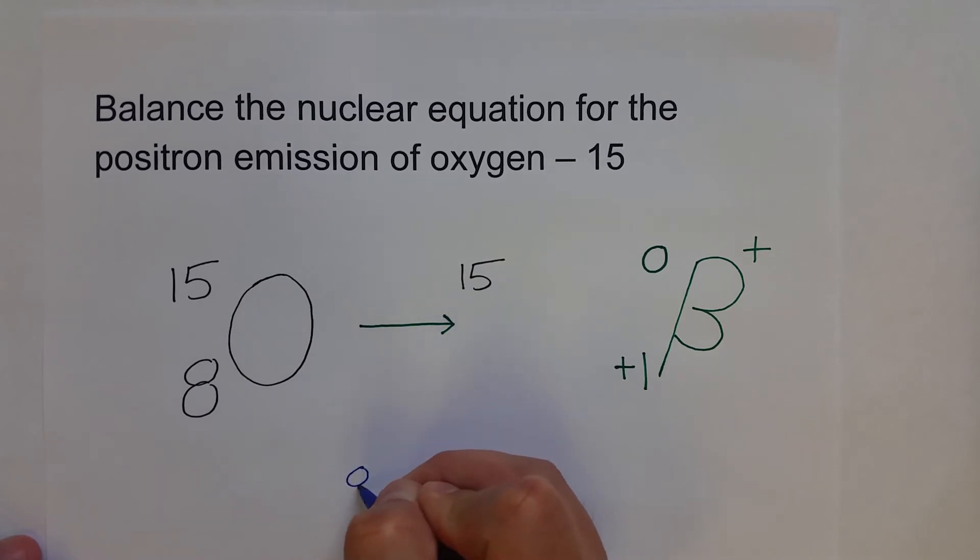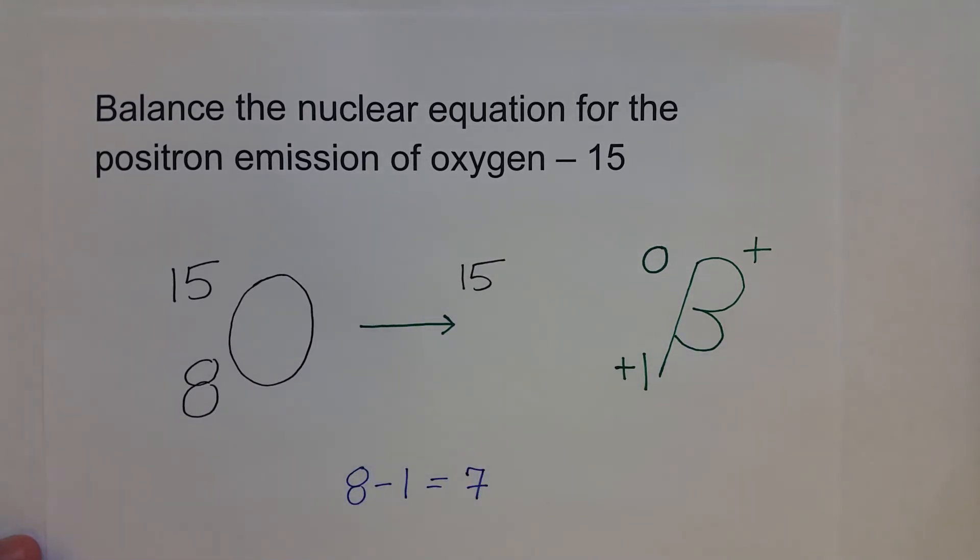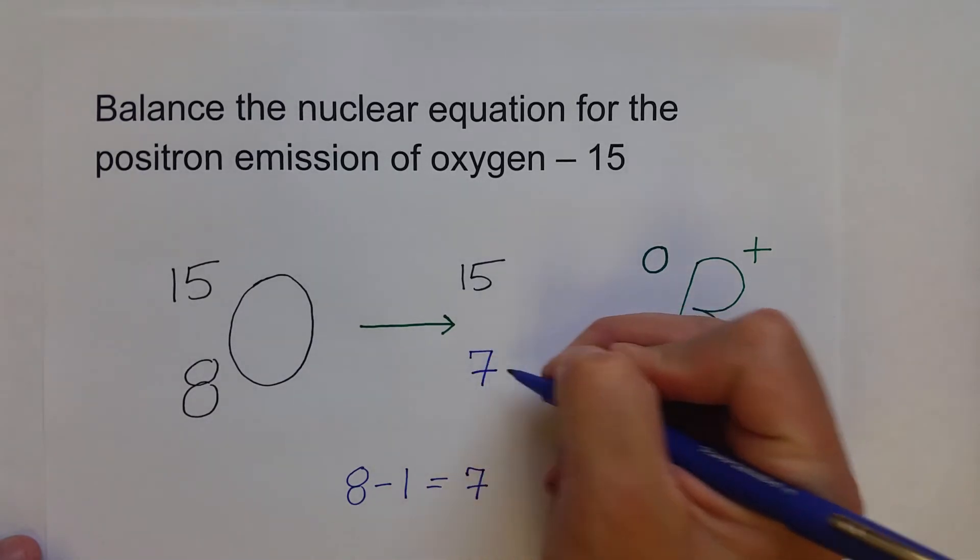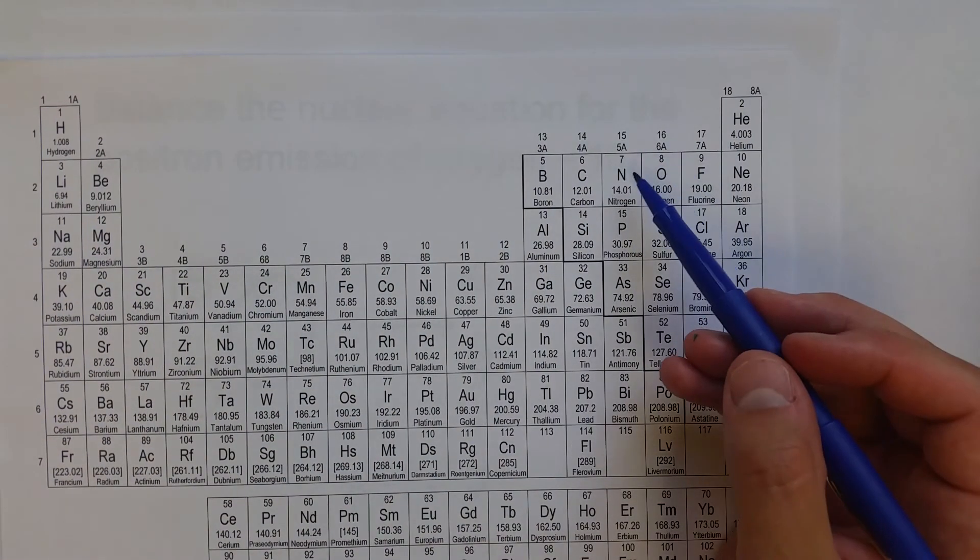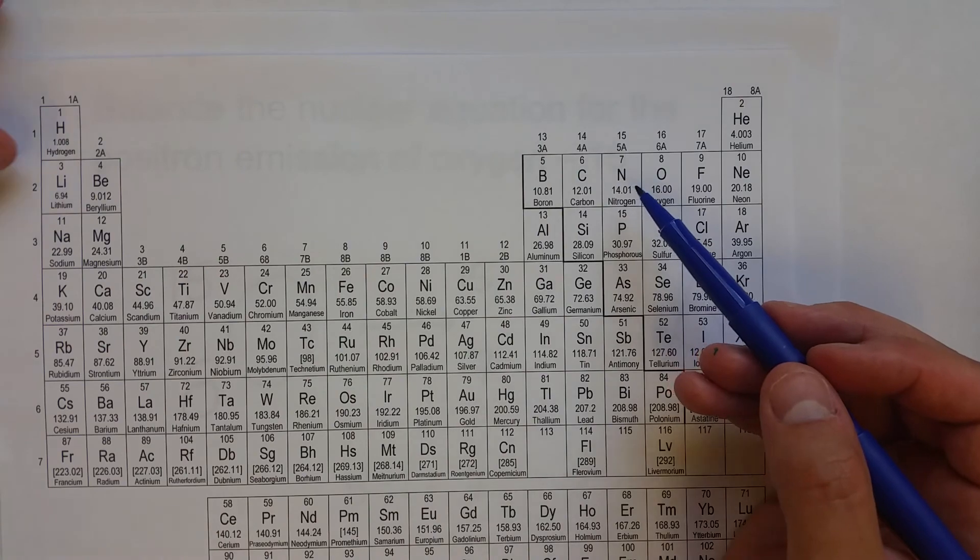The atomic number, we can figure out by subtracting one from eight, seven. And so now we know our daughter nuclide has an atomic number of seven, or seven protons. And that would put it to right here, and that is nitrogen.